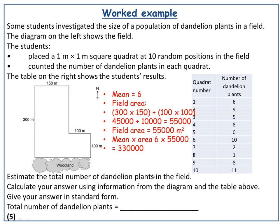The question says to give your answer in standard form. Counting the digits: it would be 3.3 times 10 to the power of 5. Things to look out for in questions: what size quadrat is it, make sure you calculate the area of the field correctly, and if there's anything extra like standard form or significant figures — they come up quite a lot at the end of questions and people quite often forget.